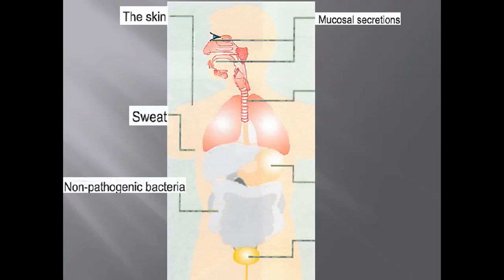We also have mucosal secretions, like tears and saliva, which contain enzymes called lysozymes that destroy the membranes of microorganisms. The mucus, which is found in the nasal cavities, trachea, and bronchi, traps dust and microorganisms, and they are expelled outside through the movement of small hair-like structures called cilia — for example, by coughing.